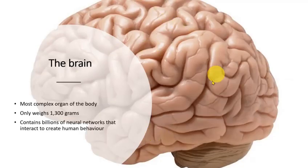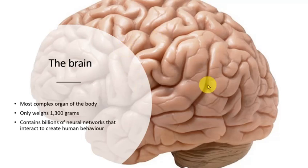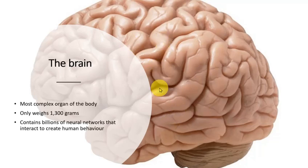The brain is perhaps the most complex organ in the human body. Although it only weighs around 1.3 kilograms in the average adult, all the behavior, actions, thoughts and feelings originate from this brain, which has billions of neural networks interacting to create what we recognize as human. Without the brain our bodies simply would not function. Understanding its structure and function is very useful before moving into details of BCI research.